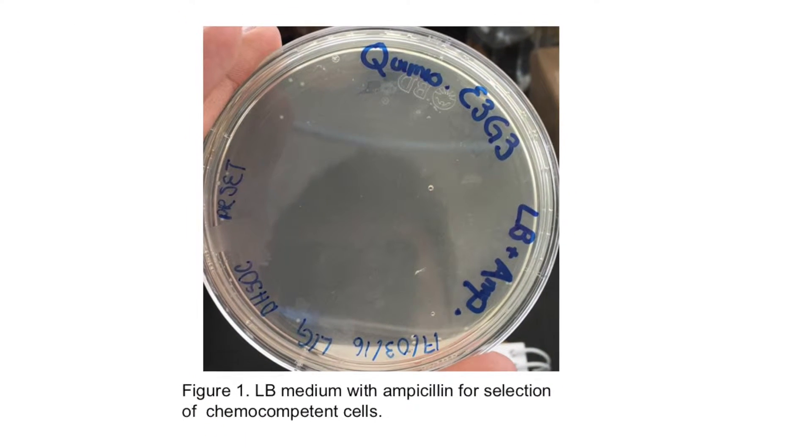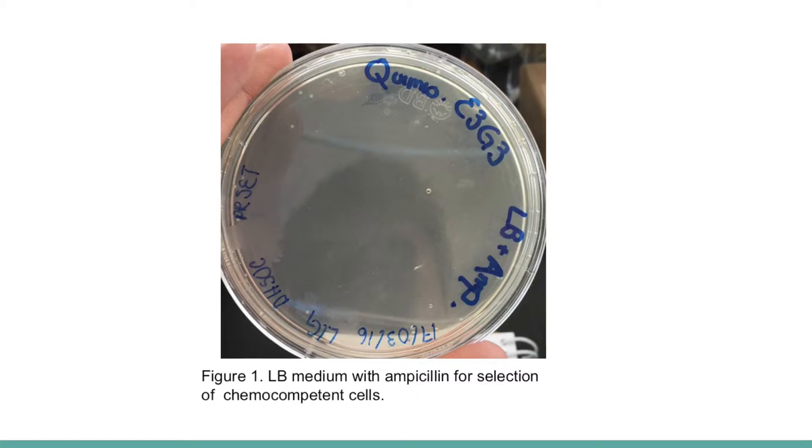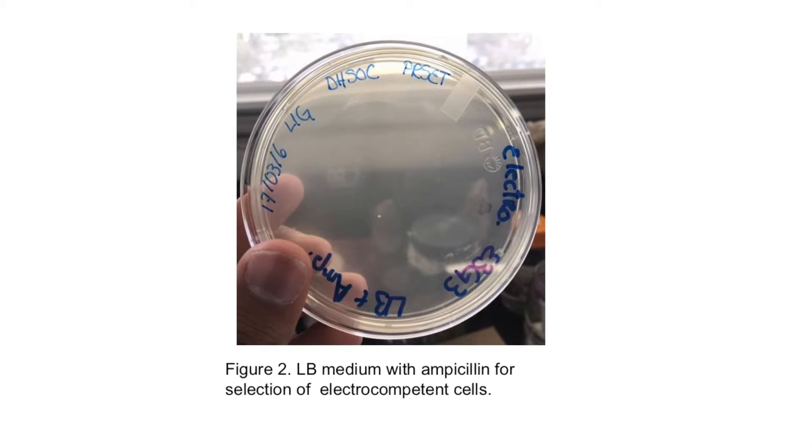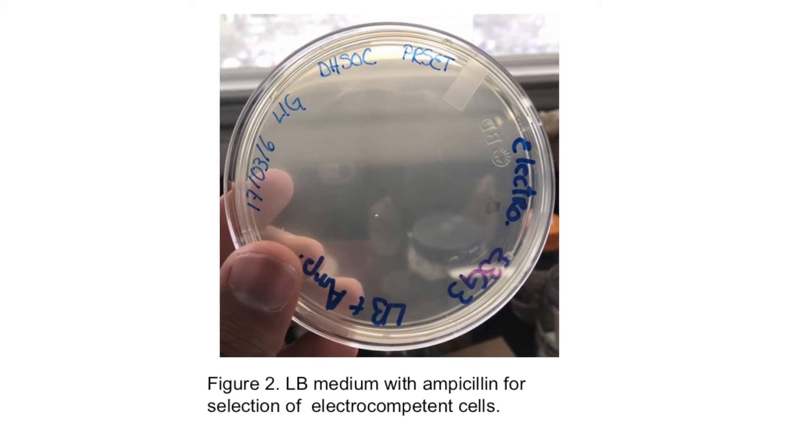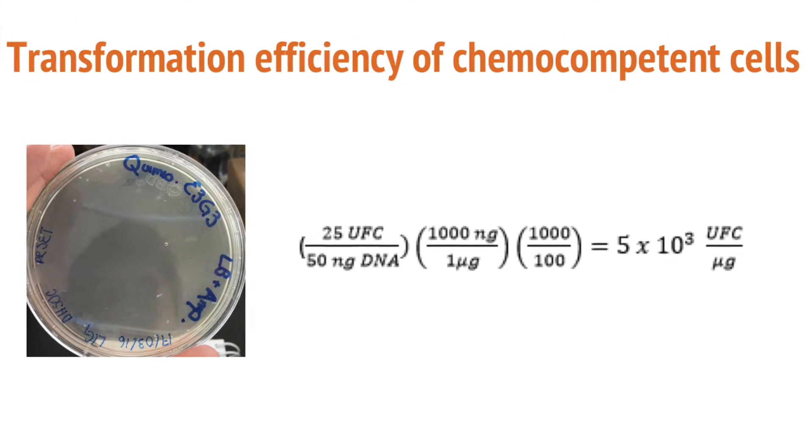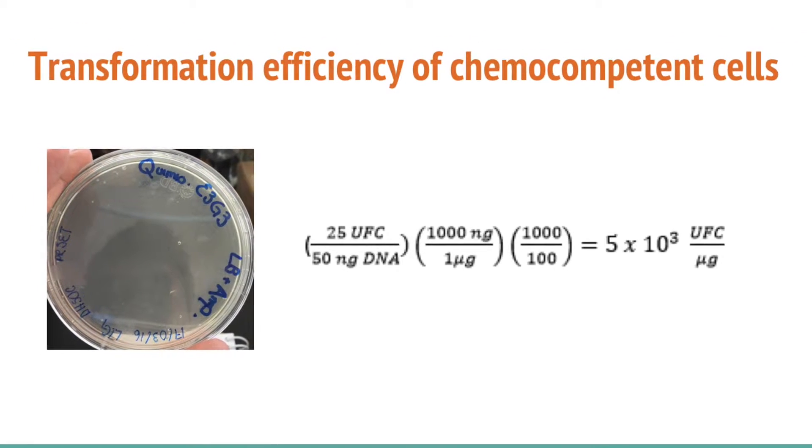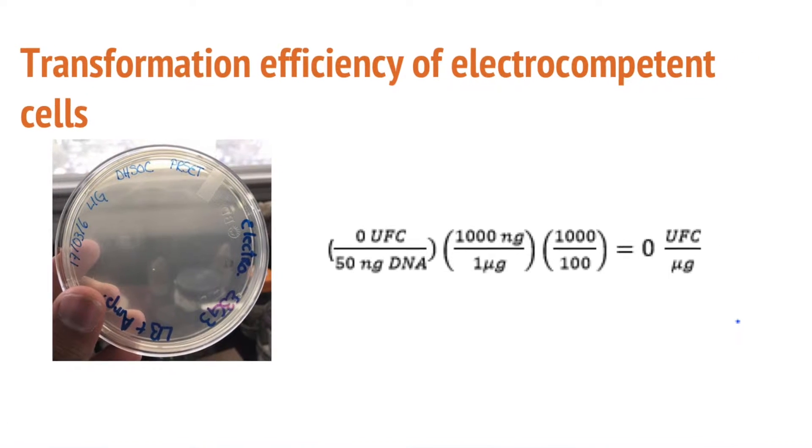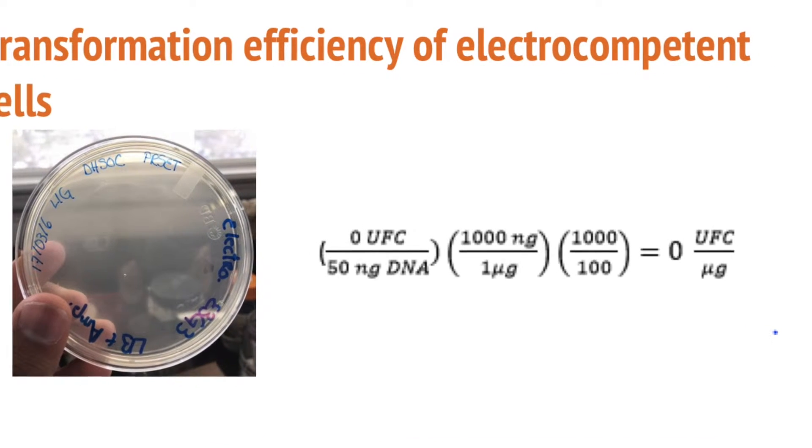The team obtained 25 colonies by the chemical method and zero colonies by the electroporation method. When performing the calculation of transformation efficiency, the chemical method achieved an efficiency of 5×10^3 CFU per microgram, while for the electroporation method the efficiency was zero.